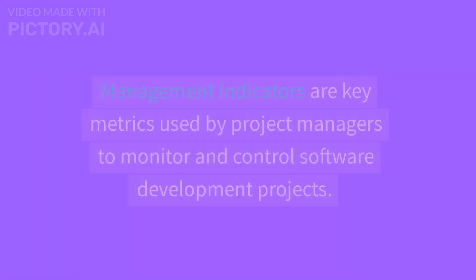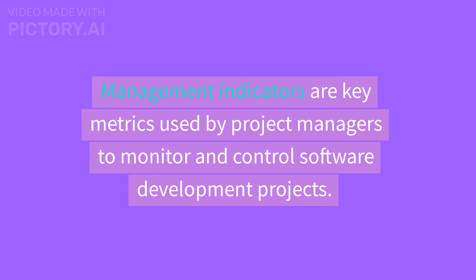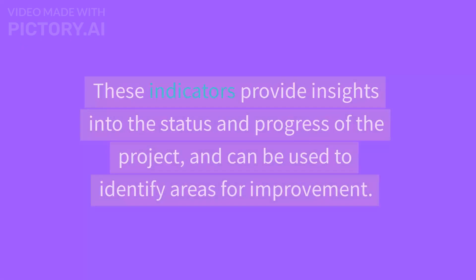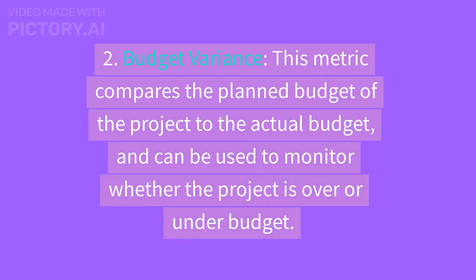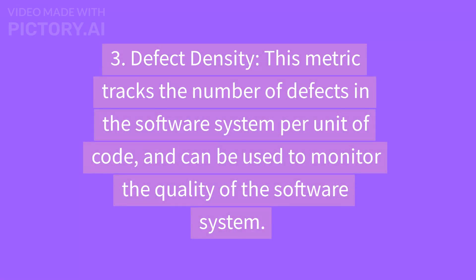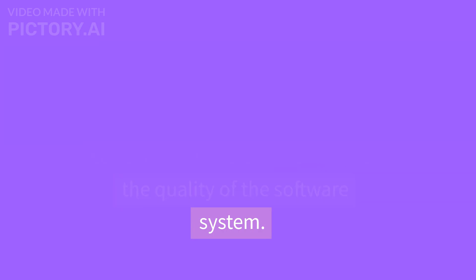Management Indicators are key metrics used by project managers to monitor and control software development projects, providing insights into the status and progress of the project. Some examples include: 1. Schedule Variance — compares the planned schedule to the actual schedule, to monitor whether the project is ahead of or behind schedule. 2. Budget Variance — compares the planned budget to the actual budget, to monitor whether the project is over or under budget. 3. Defect Density — tracks the number of defects per unit of code to monitor the quality of the software system.